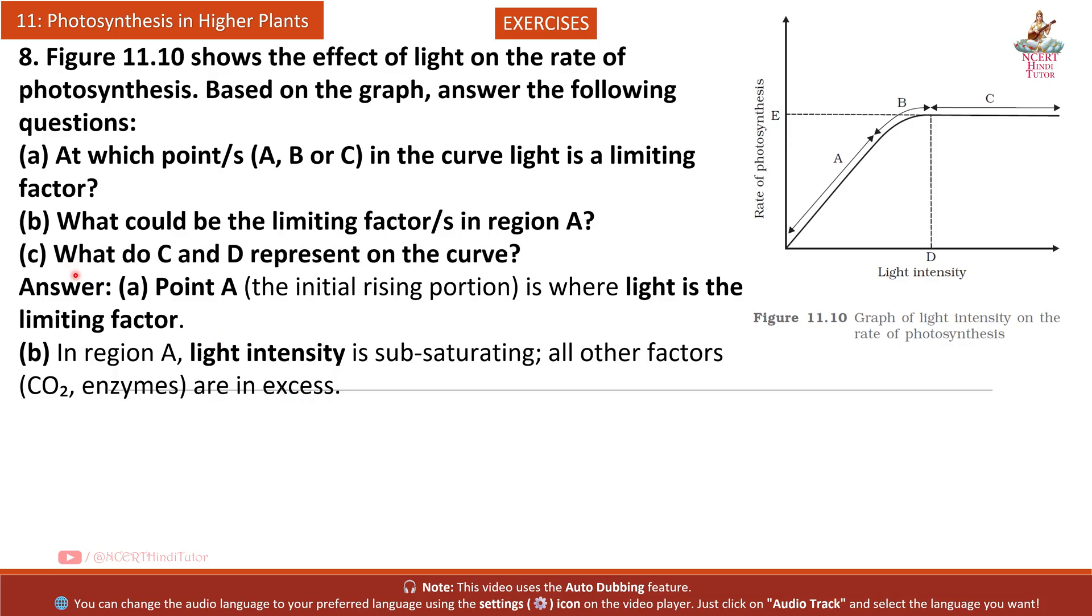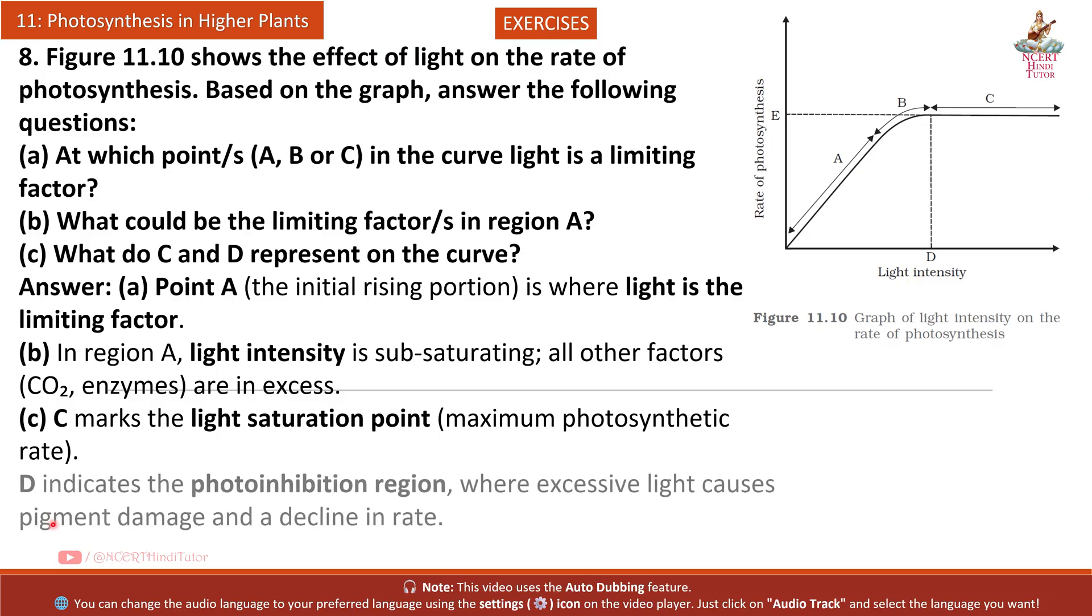What could be the limiting factor in region A? In region A, light intensity is subsaturating while all other factors like CO2 and enzymes are in excess. What do C and D represent on the curve? C marks the light saturation point - maximum photosynthetic rate. D indicates the photoinhibition region where excessive light causes pigment damage and a decline in rate.